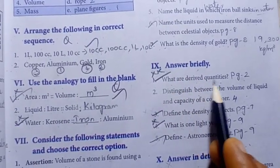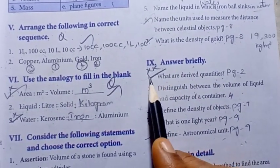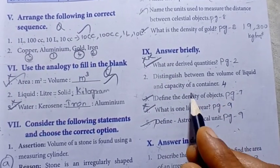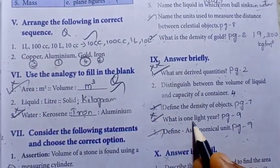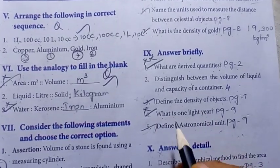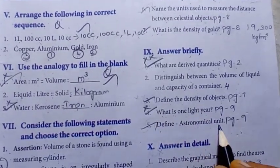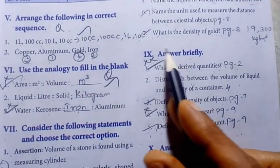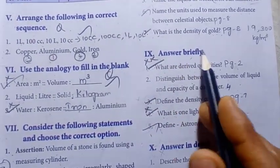First one, what are derived quantities? This is an important question. What is one light year? This is an important question. Define astronomical unit. This is an important question. So first, third, fourth and fifth, these are important questions. Answer briefly.